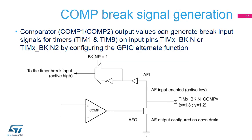Comparator output values can generate break input signals for the timers on input pins using GPIO alternate function selections incorporating the I/O open-drain connection. The purpose of the brake function is to protect power switches driven by PWM signals generated by timers. The two brake inputs are usually connected to fault outputs of power stages and three-phase inverters. When activated, the brake circuitry shuts down the PWM outputs and forces them to a predefined safe state.